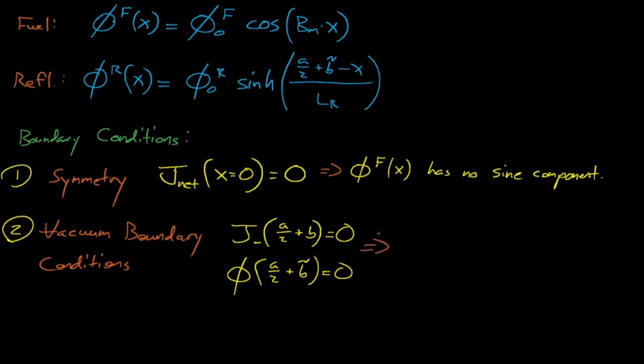These boundary conditions eliminate the hyperbolic cosine term from our reflector's flux solution and causes the inside of the hyperbolic sine term to have this a over 2 plus b tilde minus x term. This expression causes our reflector's flux solution to decrease as we move further into the reflector and to equal zero at the extrapolation distance.